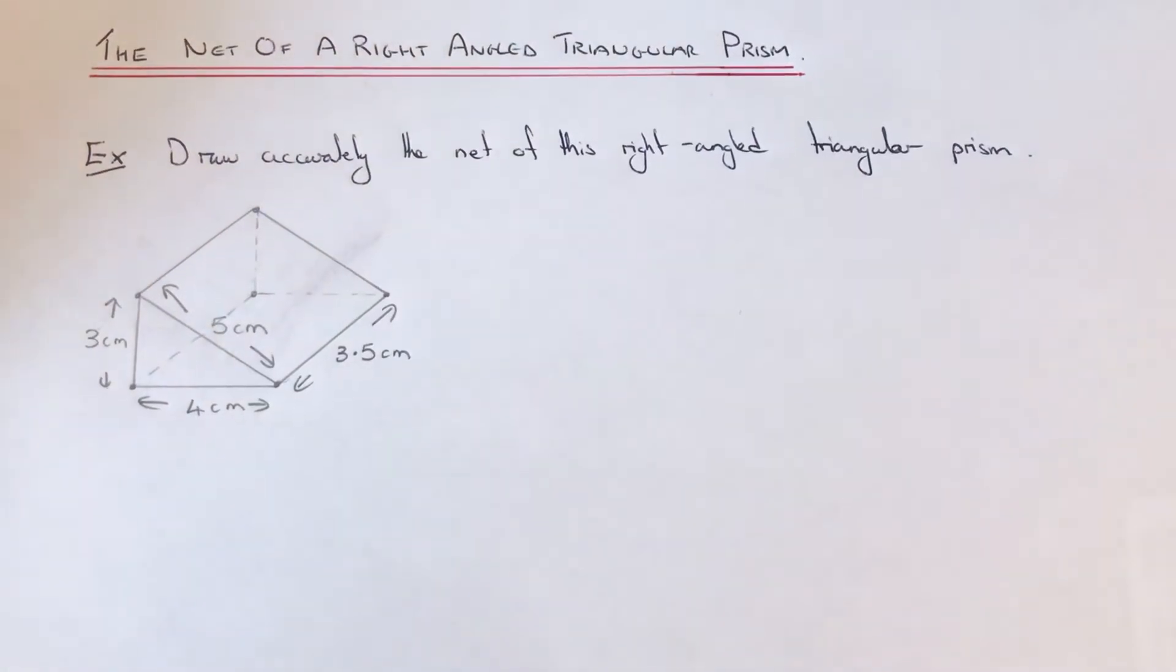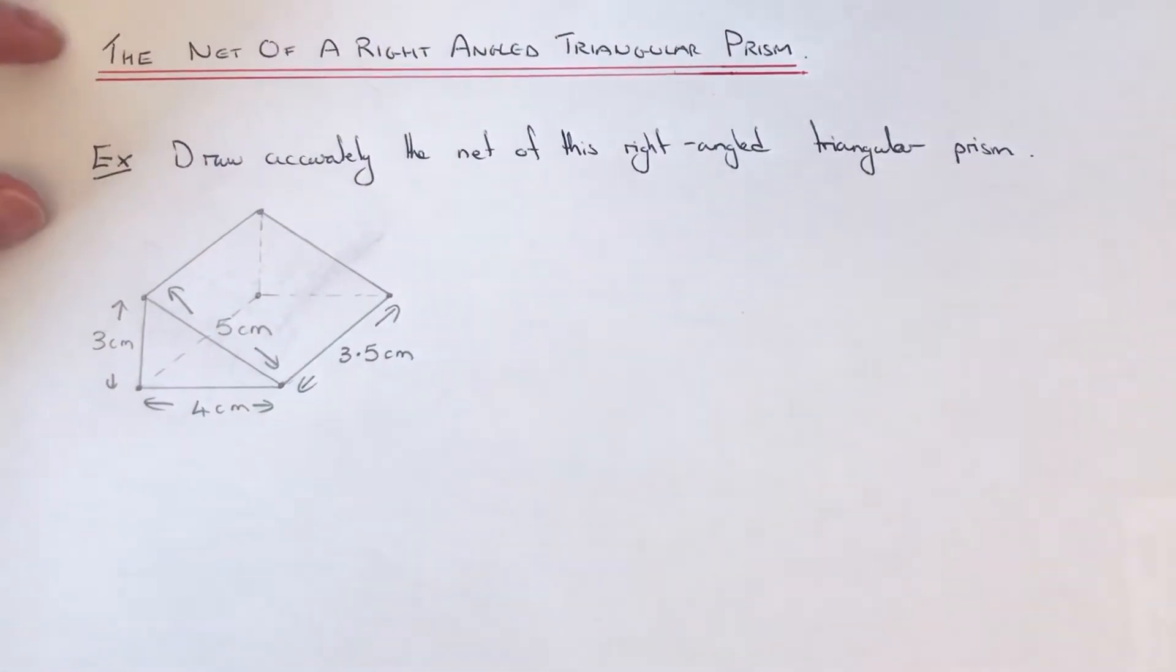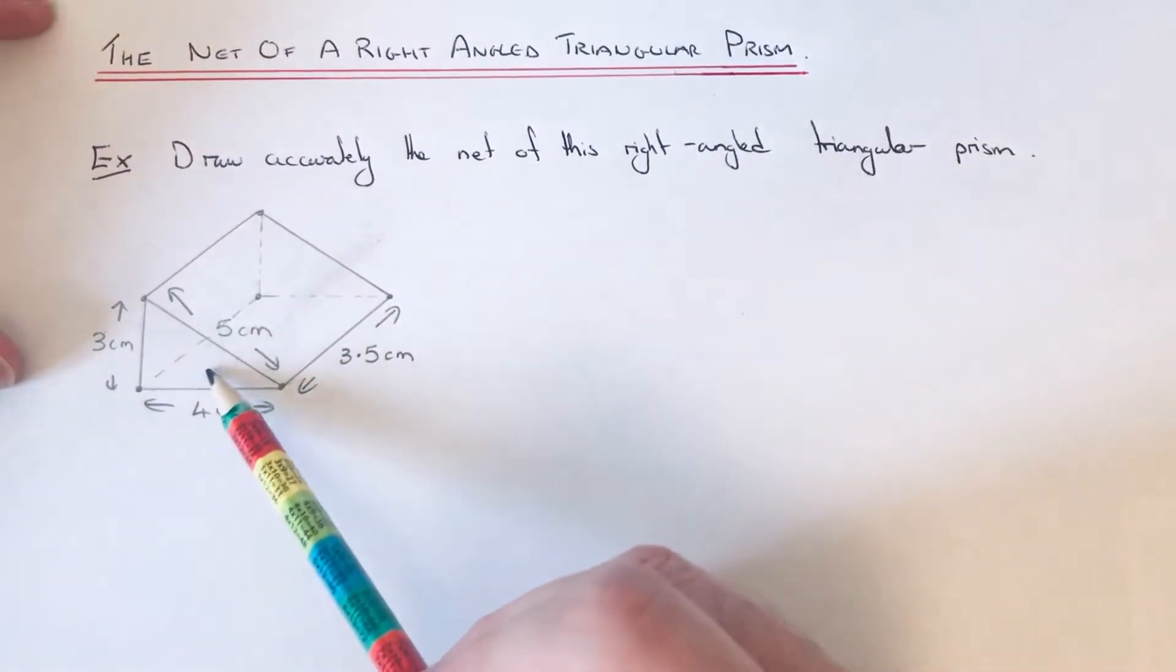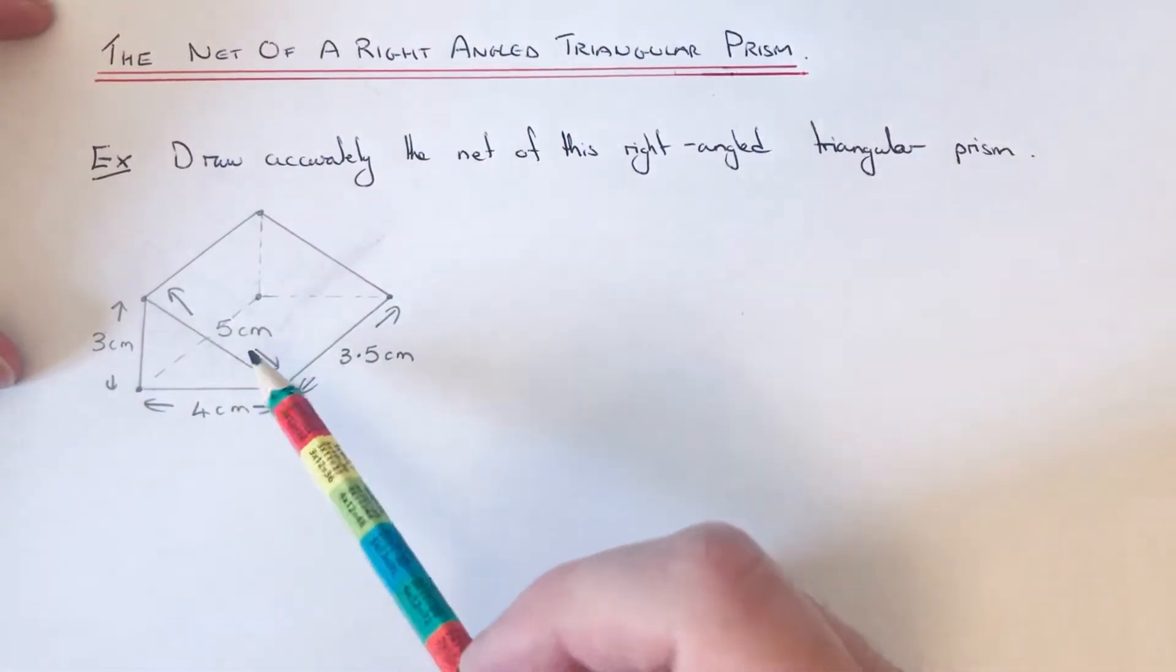Hi guys, welcome back. This is Maths 3000. Today I'm going to show you how to draw the net of a right-angled triangular prism. So we have to draw the net of this triangular prism here, so it is made